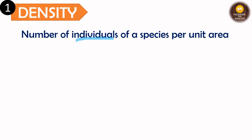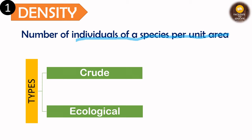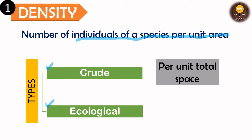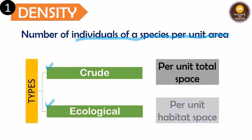Next is density. The density of a population is the number of individuals of a species per unit area. There are two types of densities. The first is crude density, which is per unit total space — whatever total space of that area is present, it is divided by that. Ecological density is per unit of habitat space — the space in which the organism is actually inhabiting is divided by the number of individuals.